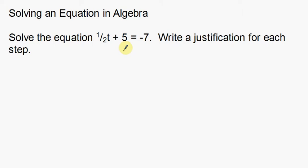The first thing we're going to do is solve this equation. So I'm going to rewrite this: one half t plus 5 is equal to negative 7.